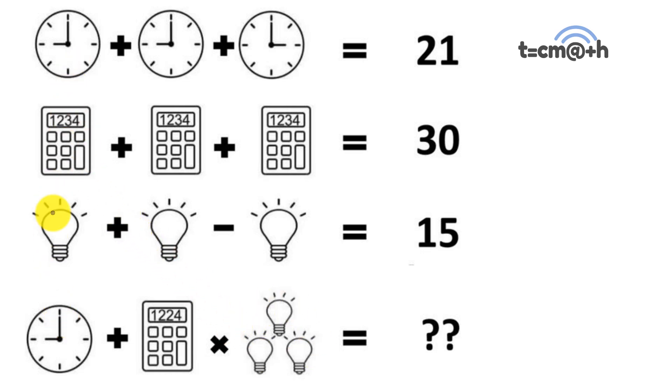So first off, we're going to work out what the clocks are worth. If we have a look at the clocks here, we have a time of nine o'clock. On this clock we have nine o'clock, and on this clock we have three o'clock. Nine plus nine plus three is equal to 21.